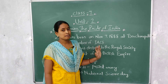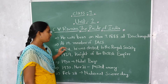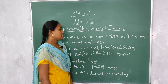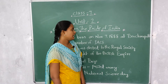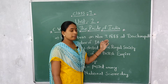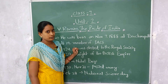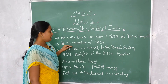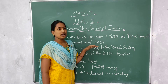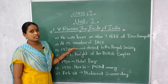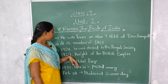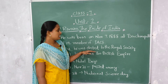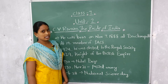Let's know some important milestones of C.V. Raman. First, he was born on November 7th, 1888 at Tirichirapalli in Tamil Nadu. Next, at the age of 19, he became a member of the Indian Association for Cultivation and Science. And in the year 1924, he was elected to the Royal Society.